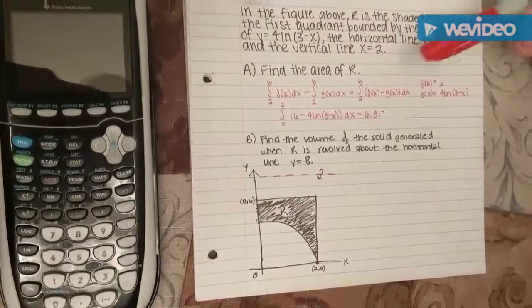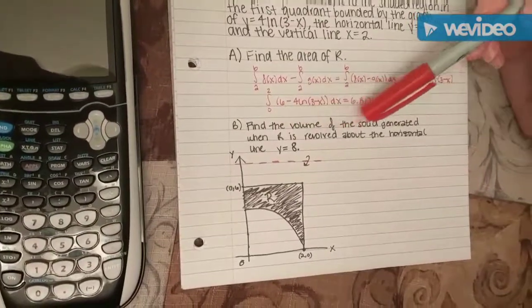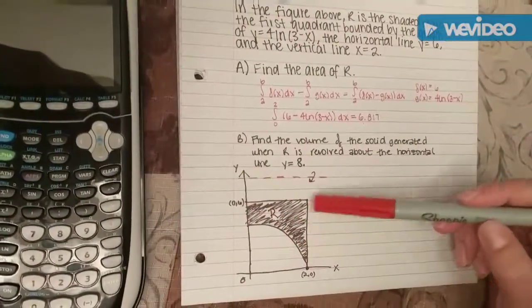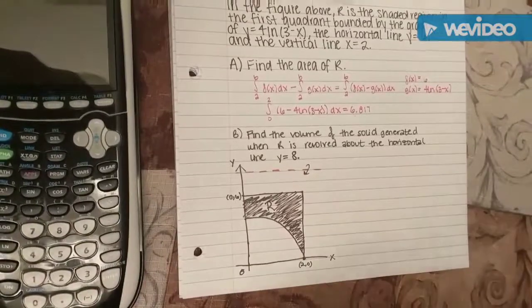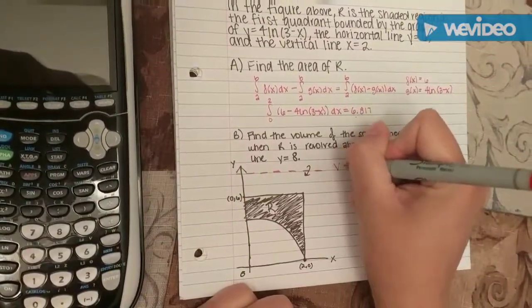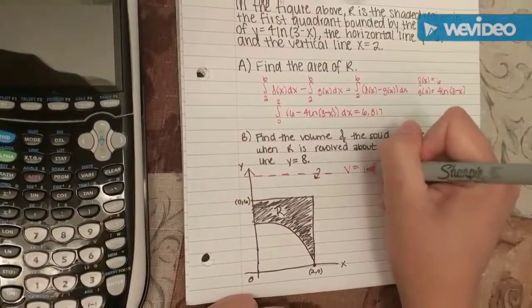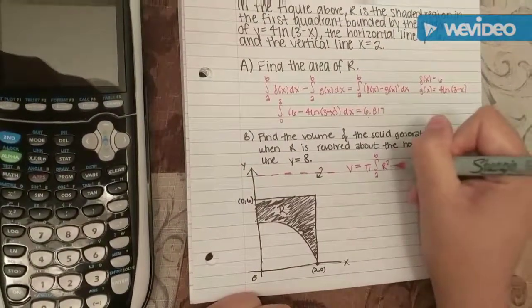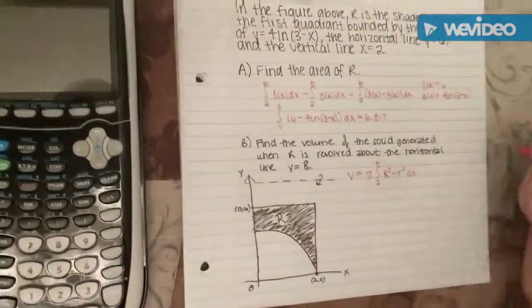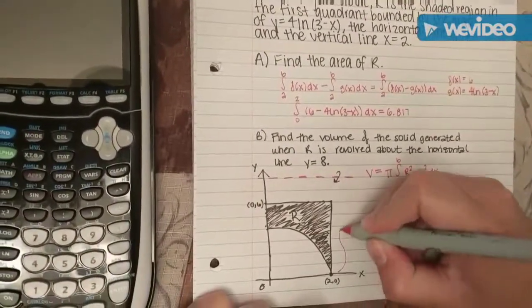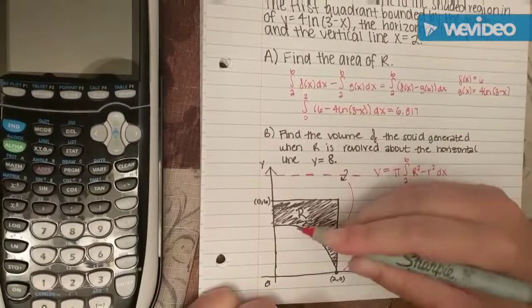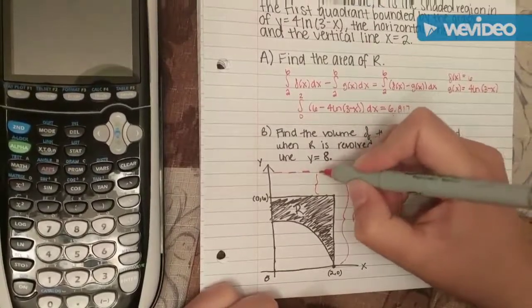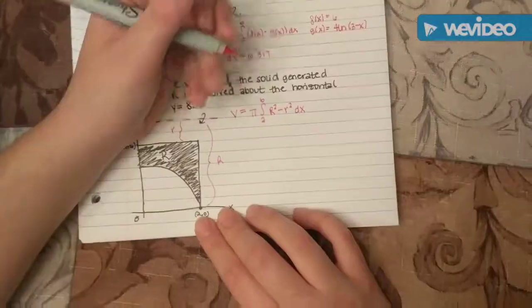For part B, we have to find the volume of the solid generated when R is revolved about the horizontal line y equals 8. To do this, we use the washer method because the solid is not touching the axis of rotation. This is volume equals pi times the integral from a to b of big R squared minus little r squared dx. Big R is the distance from the axis of rotation to the function that is farthest away from it. Little r is the distance from the axis of rotation to the function closest to it.